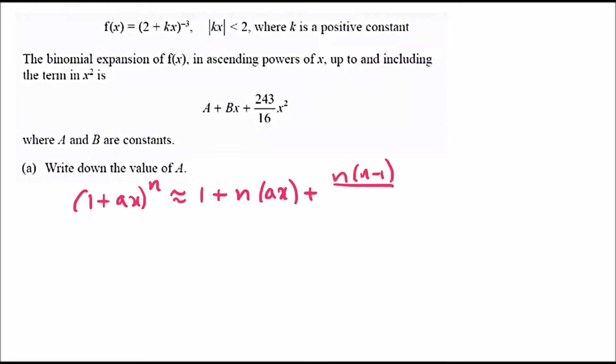Because we're going up to x^2, we'll stop at that point. Now let's rewrite this equation. (2 + kx)^(-3) - we need to get it to (1 + something) form. To get to 1 plus, we need to take 2 out.